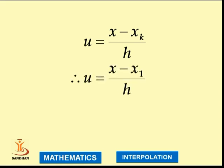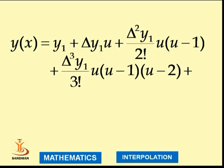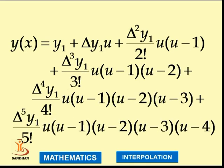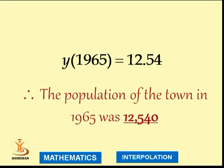Using the formula for Newton's forward difference, we substitute the values and obtain the population for 1965 as 12.54. On simplification, therefore, the population of the town in 1965 was 12,540.